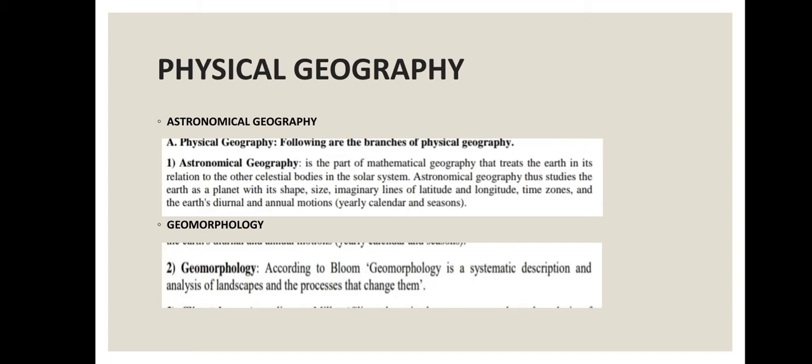Astronomical geography covers the earth's shape, size, imaginary lines of latitude and longitude, time zones, and the earth's diurnal and annual motions. In this branch we study the complete characteristics of the earth — its shape, size, and imaginary lines. That covers all the areas of astronomical geography. Now let's move to the second branch of physical geography.